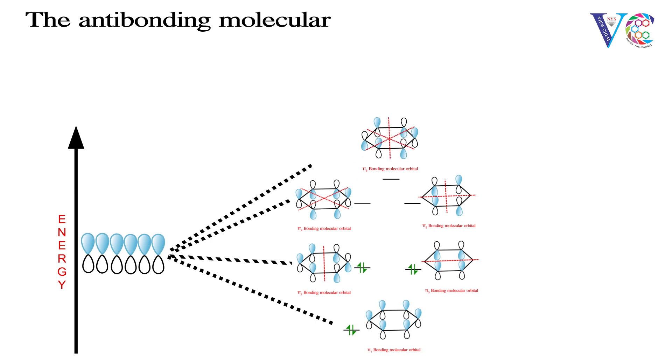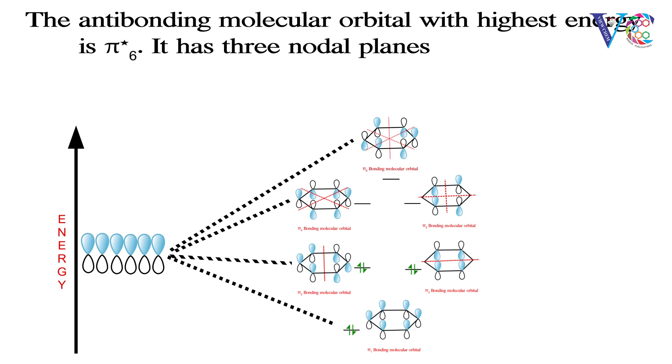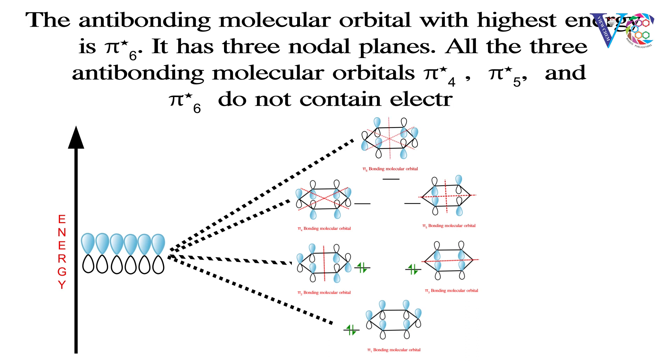The anti-bonding molecular orbital with highest energy is pi star 6. It has three nodal planes. All the three anti-bonding molecular orbitals, pi star 4, pi star 5, and pi star 6 do not contain electrons.